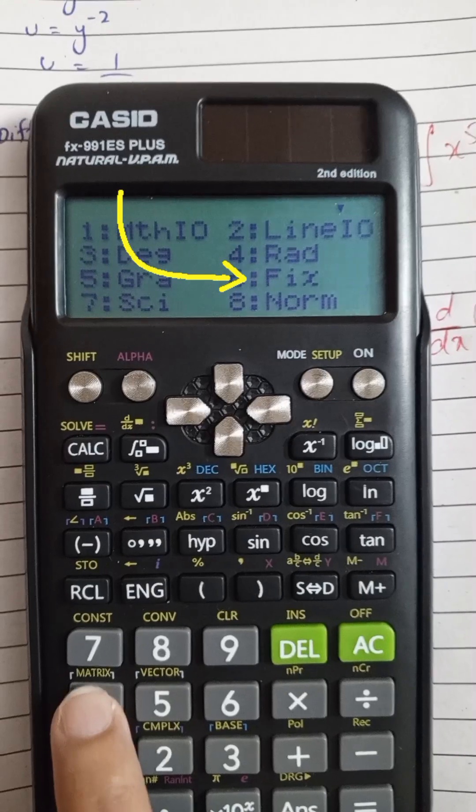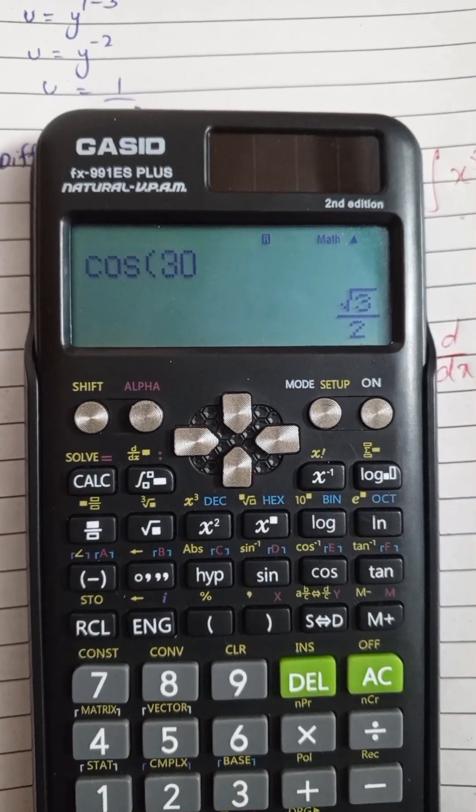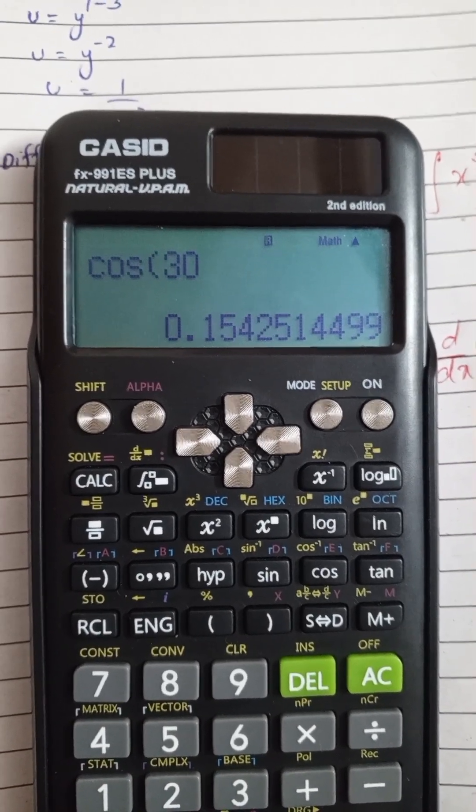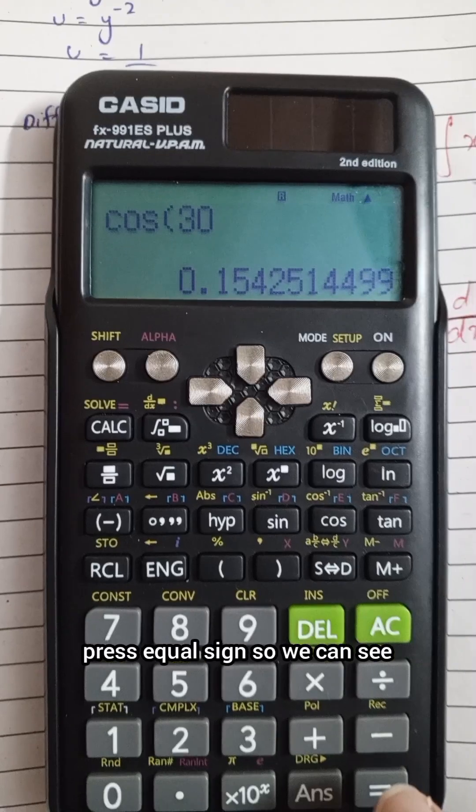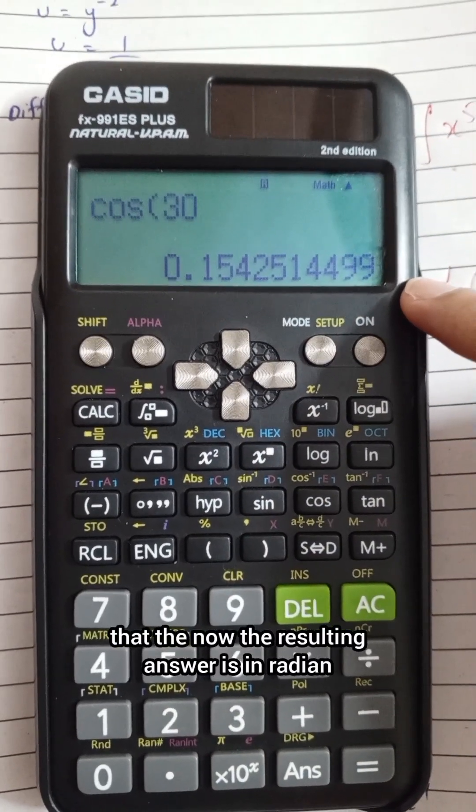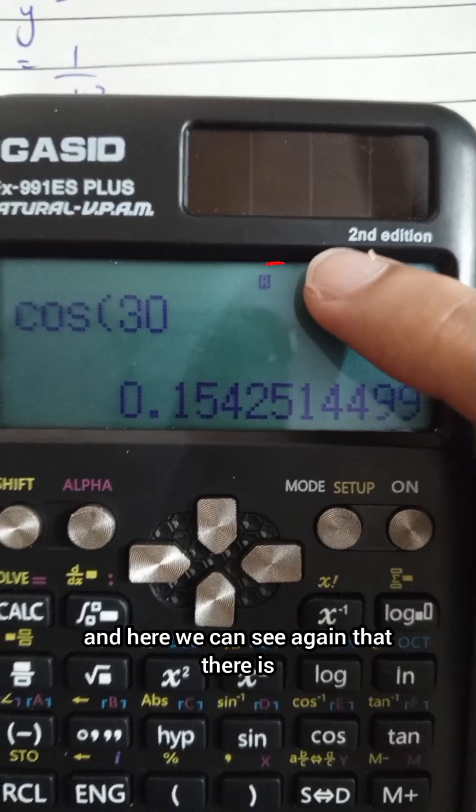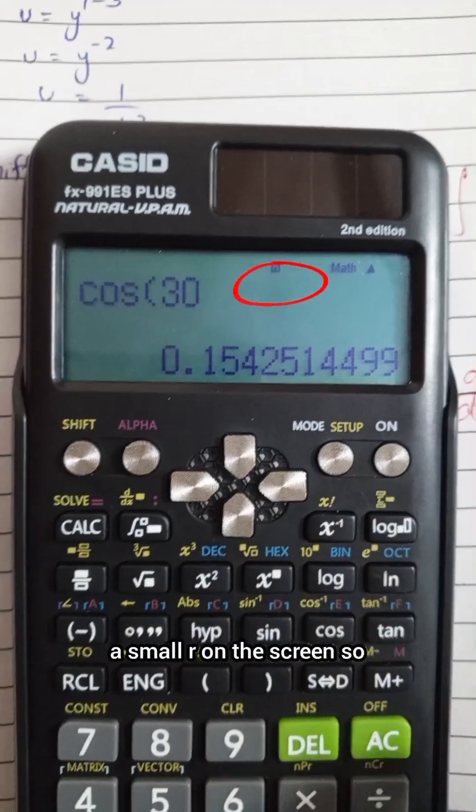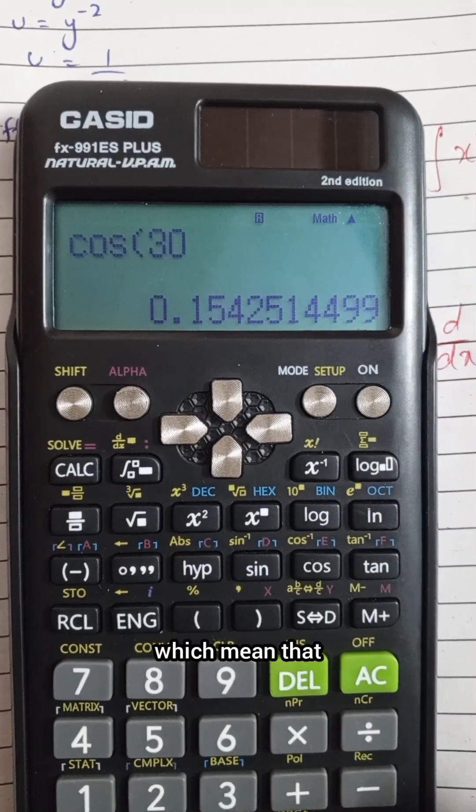Now we will press the equal sign. We can see that the resulting answer is now in radian. Here we can see again that there is a small 'r' on the screen, which means that the answer of trigonometric functions will be in radian.